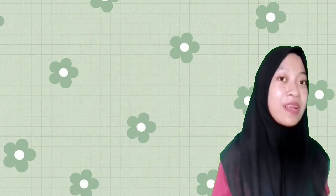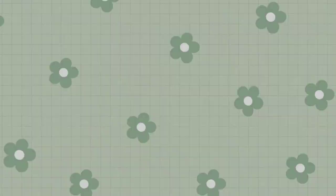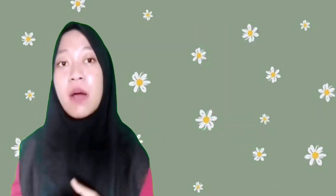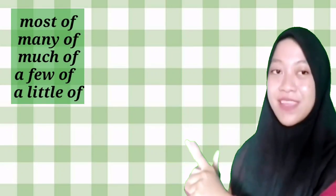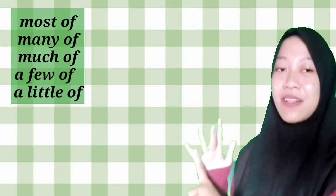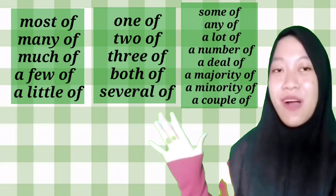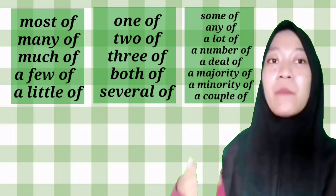More examples include 'the president of Indonesia' and 'the director of PT ABC.' The second use is that the preposition 'of' is used to indicate an amount or number — the number of objects. For example: 'large amount of milk,' 'a big piece of cake,' 'a hot cup of coffee,' 'small amount of sugar.' The following quantity words also use 'of': most of, many of, much of, a few of, a little of, one of, two of, three of, both of, several of, some of, any of, a lot of, a number of.